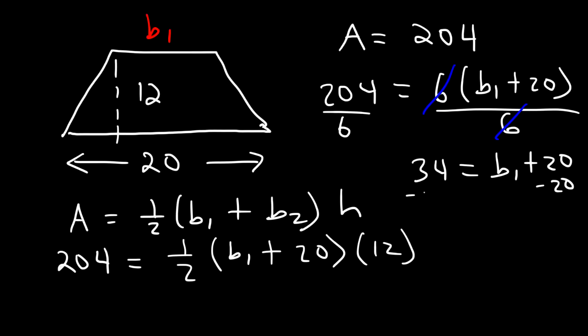Now all we need to do is subtract both sides by 20. So b₁ is 34 minus 20. So the length of the first base is 14. And that's what you can do if you need to find the missing side of a trapezoid. Basically, write the formula, plug in everything you have, and just find the missing variable. It's math at that point. It's just algebra.